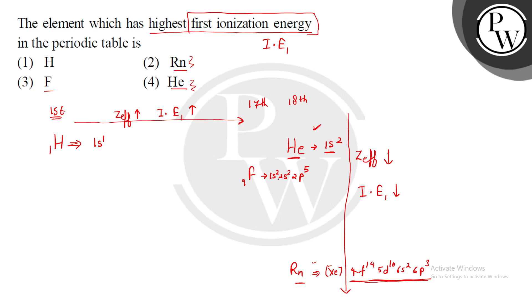If I look at fluorine, it is not fully filled. Fluorine and hydrogen are not fully filled, so their configuration is less stable and it is less difficult to remove an electron from them. Therefore, helium and radon will have higher ionization energy compared to fluorine and hydrogen.